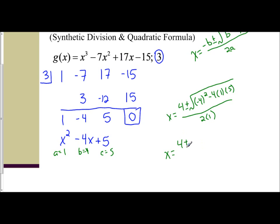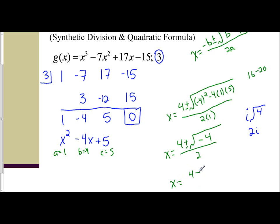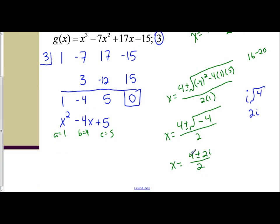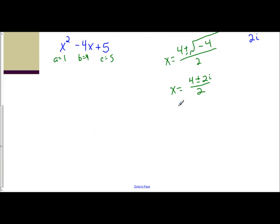Now we simplify: 4 plus or minus — negative 4 squared is 16, and 4 times 1 times 5 is 20, so inside the radical I have 16 minus 20, which is negative 4. The denominator is 2. The negative comes out and becomes an i, so I have i times the square root of 4, which is 2 — giving 2i. So x equals 4 plus or minus 2i over 2.